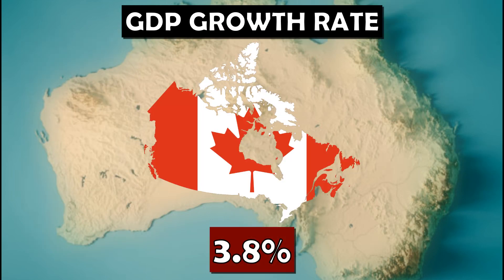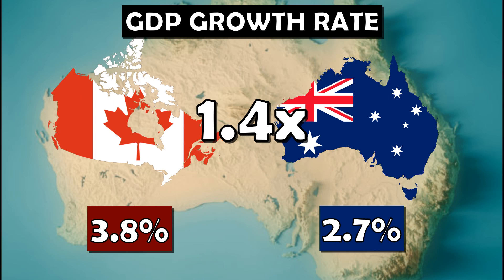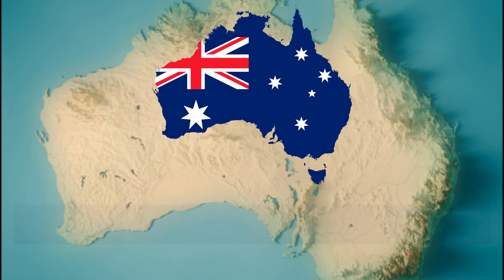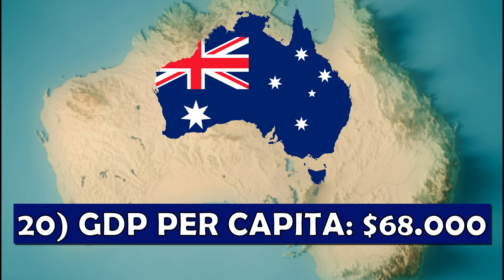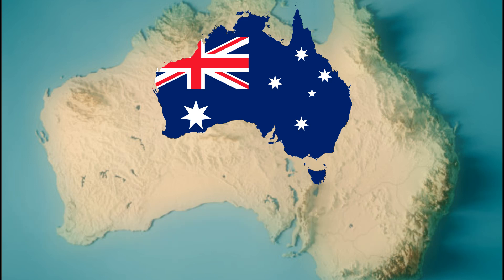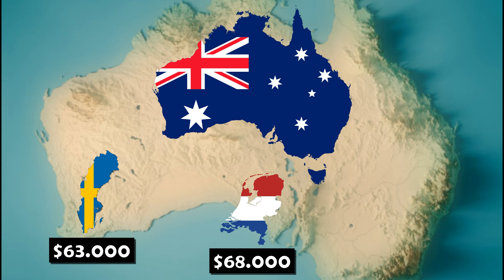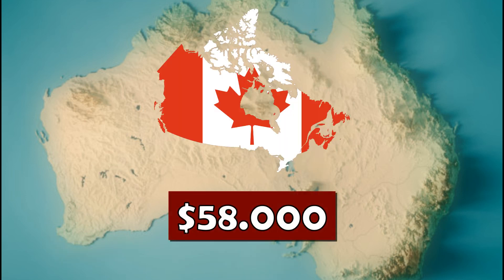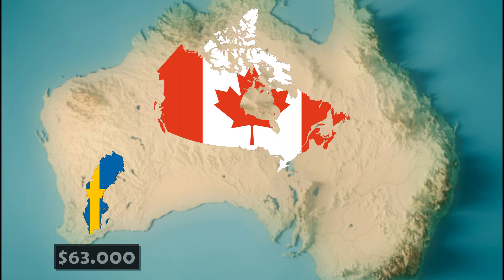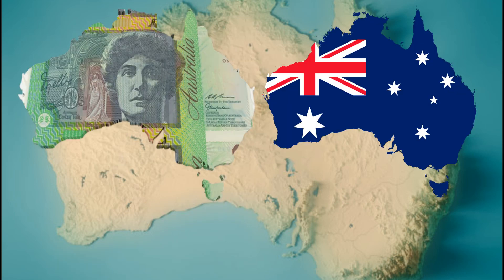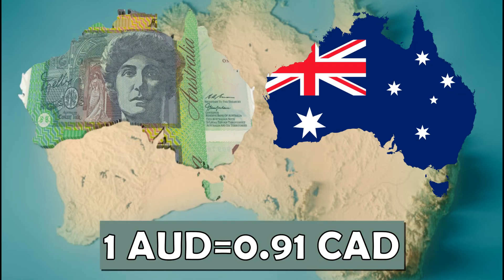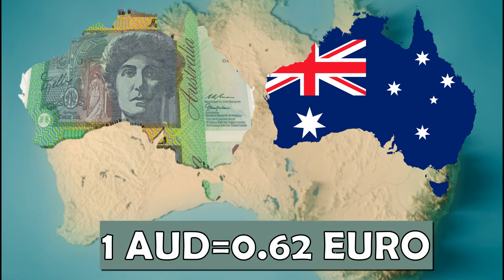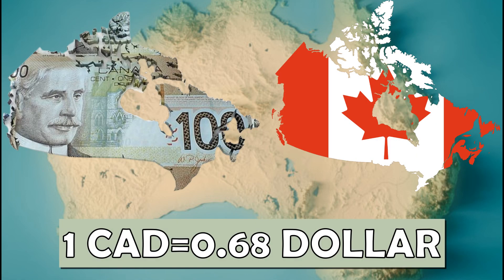Canada's GDP growth rate is 3.8%, which is 1.4 times bigger than Australia's 2.7%. Australia's GDP per capita, however, is higher at 20th place with $62,000, comparable to Sweden and the Netherlands. Canada's $58,000 at 23rd place is comparable to Sweden and Austria. Australians pay with the Australian dollar, equal to 0.91 Canadian dollars and 0.62 euros, while a Canadian dollar equals 0.68 US dollars.